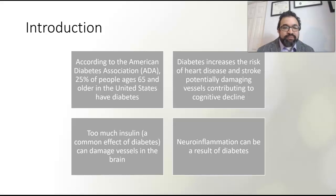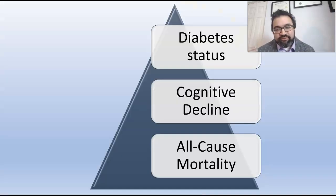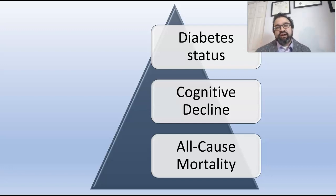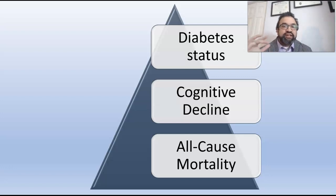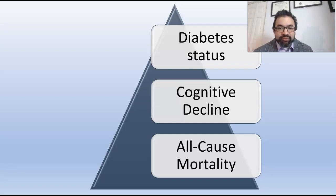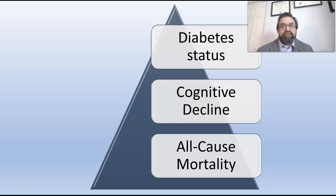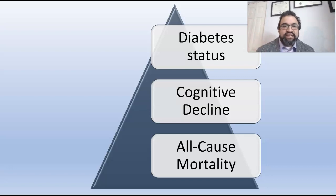If we were to characterize this in the form of a model, this is the PRISM model, which is characterized within my own website. It's a three-tiered model which looks at one variable — cognitive decline versus overall mortality — but then also incorporates a third layer, which in this case is the chronicity of diabetes.